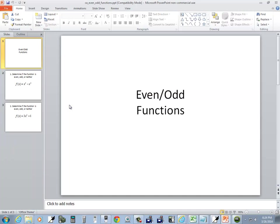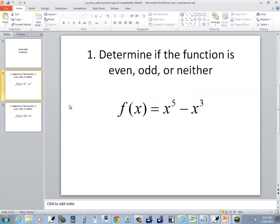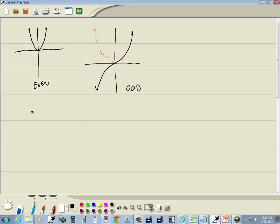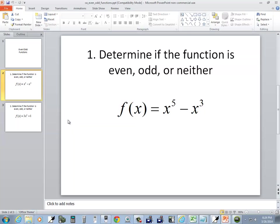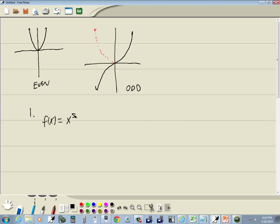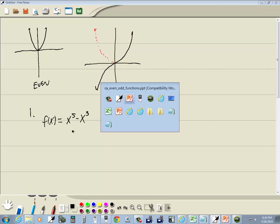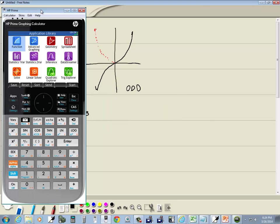So these problems, our first one, says determine if the function is even, odd, or neither. We've got f of x is equal to x to the fifth minus x to the third. Well, we'll just graph it and see what happens. So let's do that.